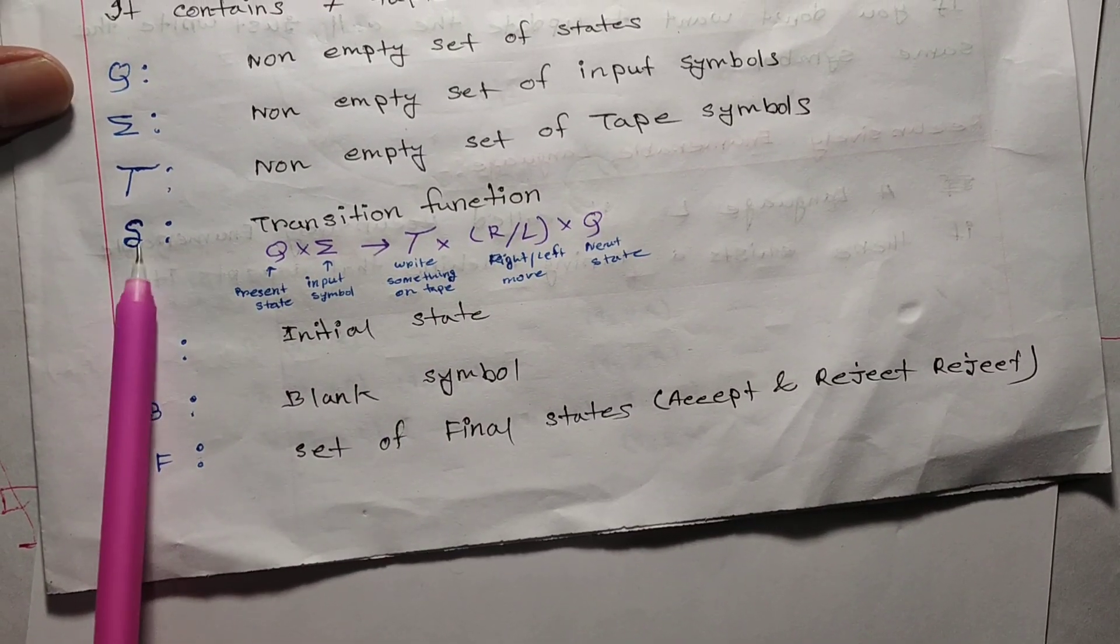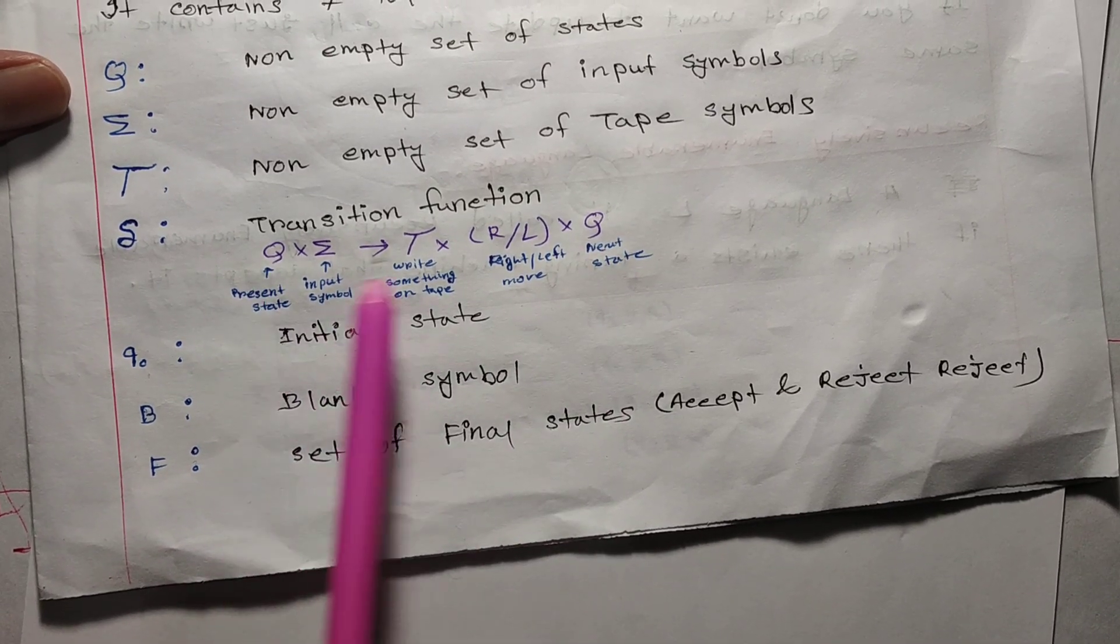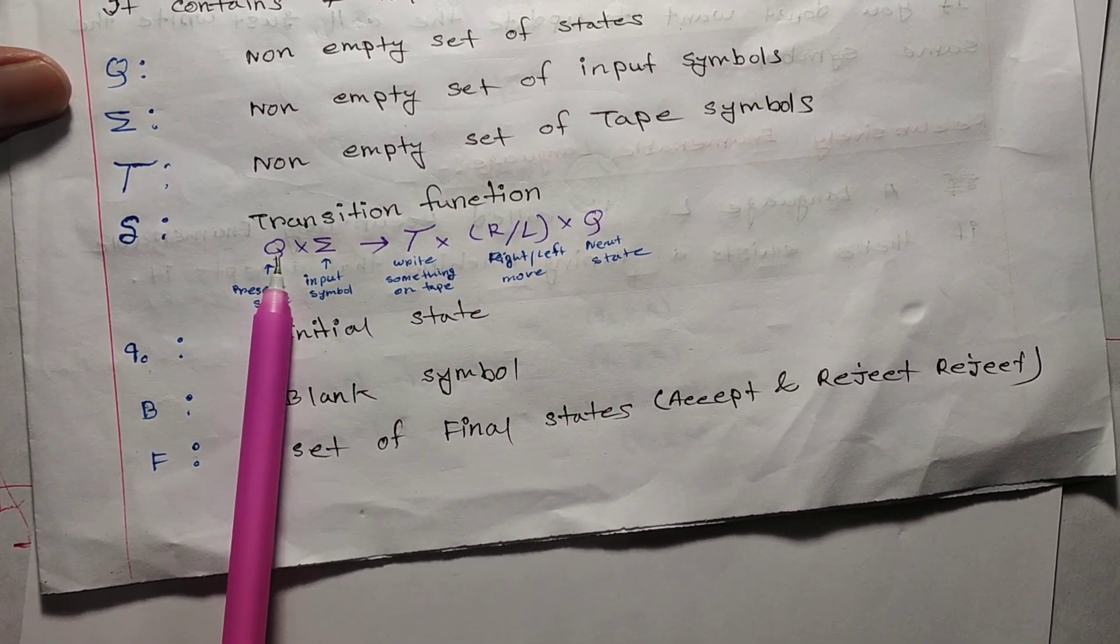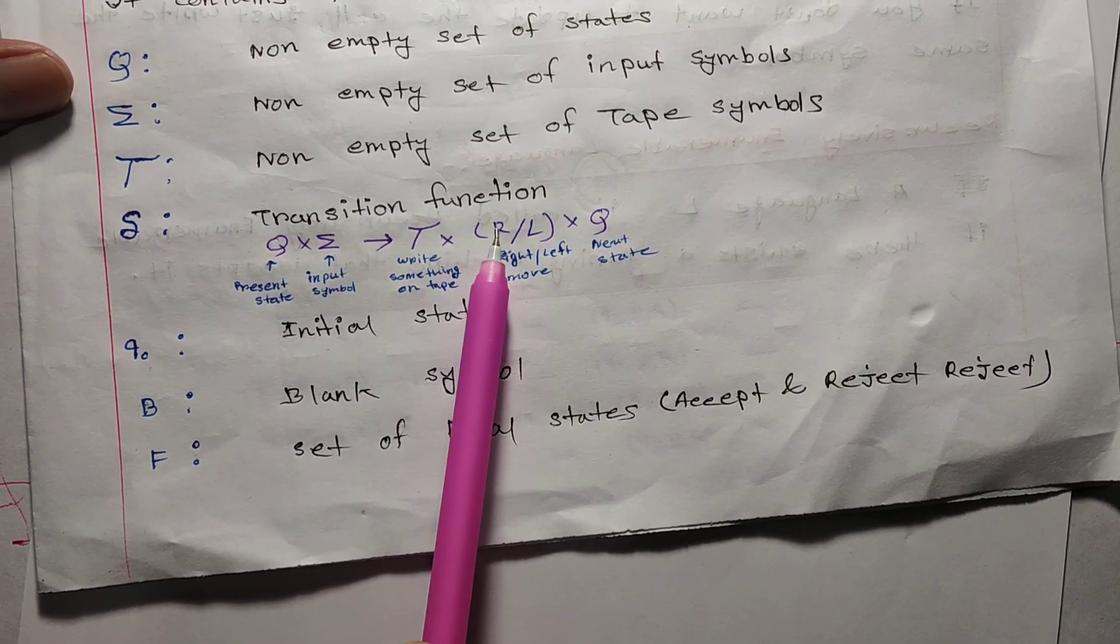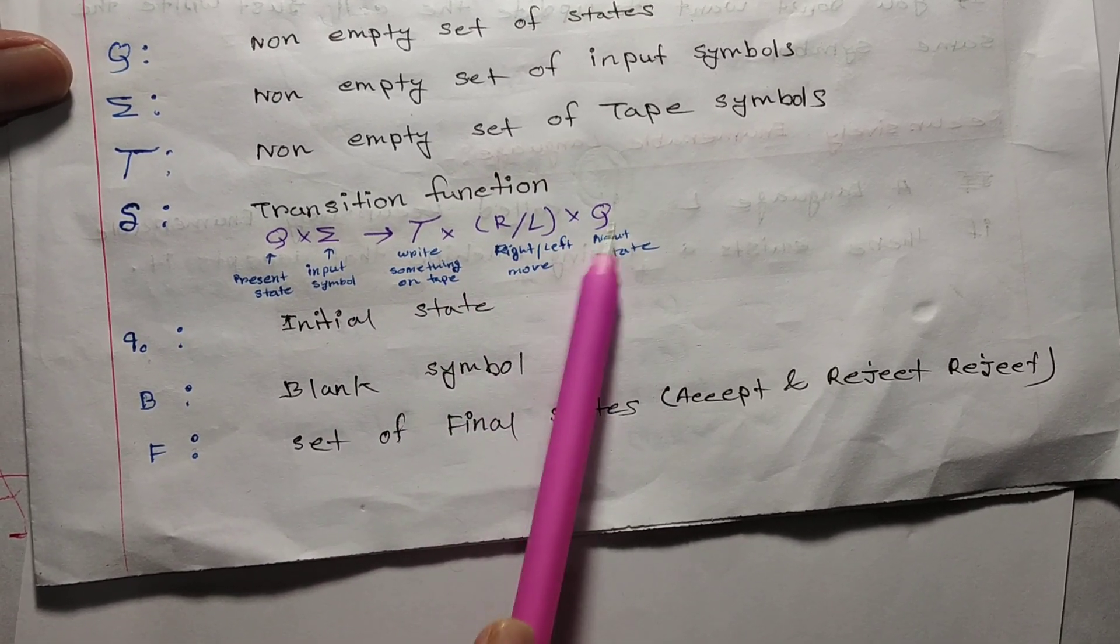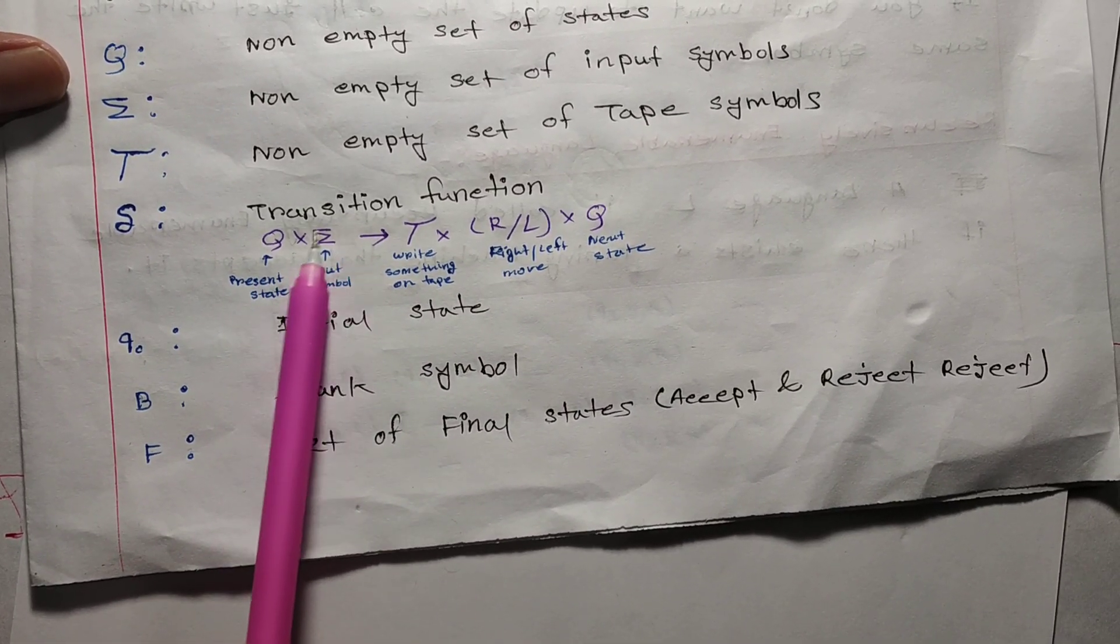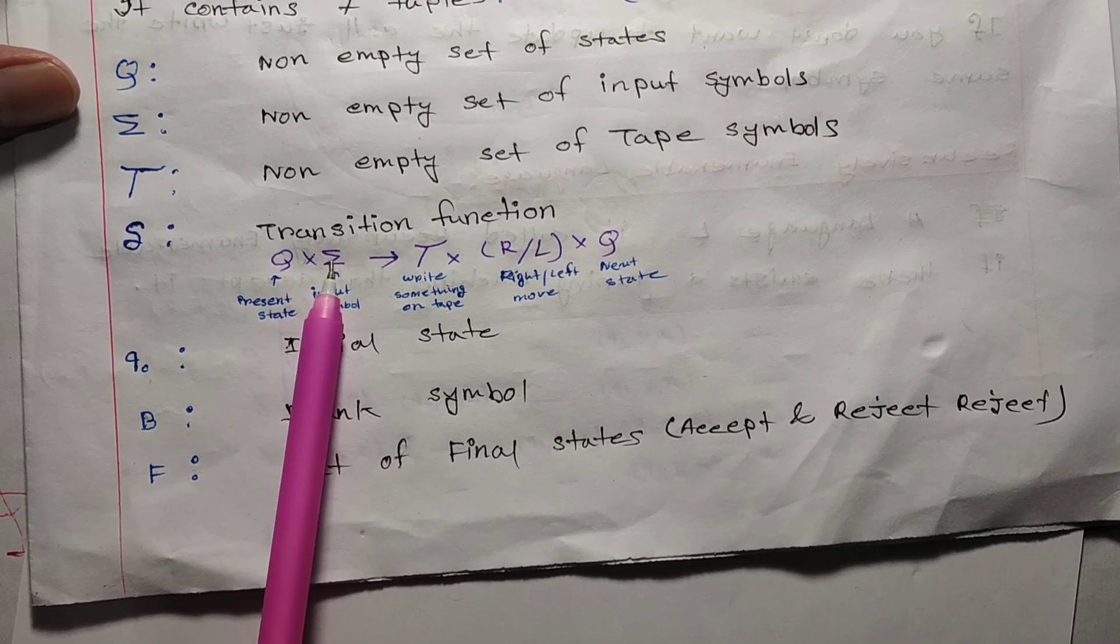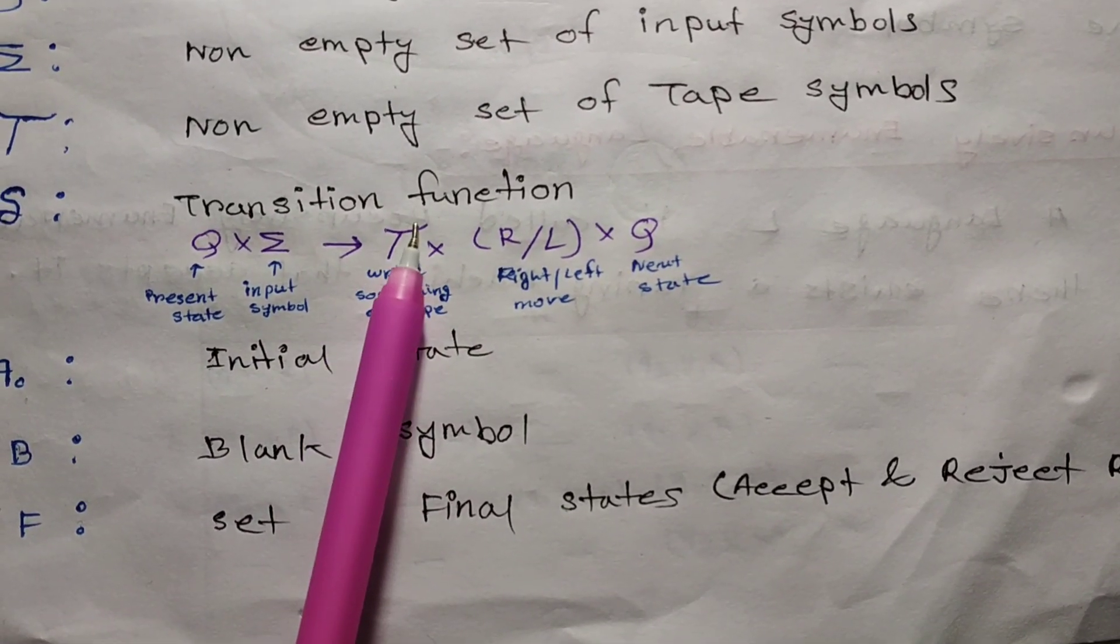The transition function δ maps Q × Σ to Γ × {L, R} × Q. That means, from the present state and input symbol, we get a tape symbol to write, a direction to move left or right, and the next state.